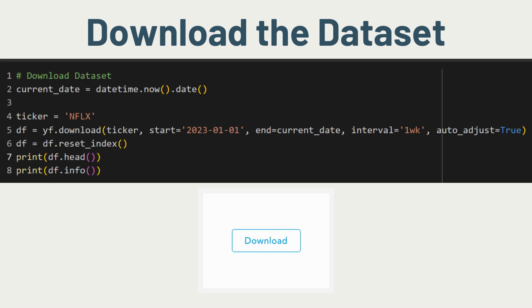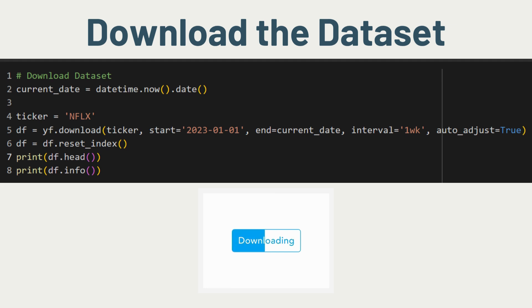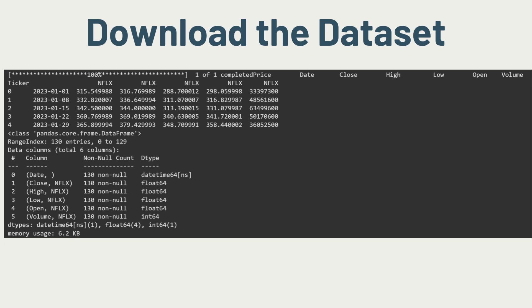We will load the dataset. For this notebook we will select Netflix for the stock ticker that we will be making predictions on. We will pass the ticker, time period of data we need, and time interval arguments into the download function. For this case we will select data starting from the year 2023 till now with a one-week interval. Once loaded, we can inspect the data — it is in the form of a pandas DataFrame with date, close, open, high, and low prices, and the volume traded.